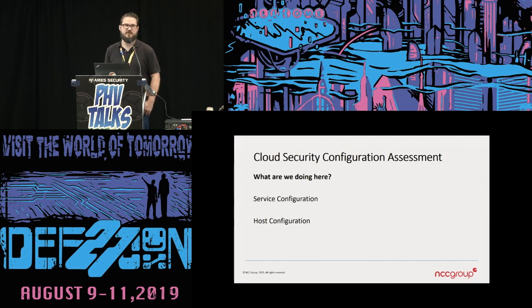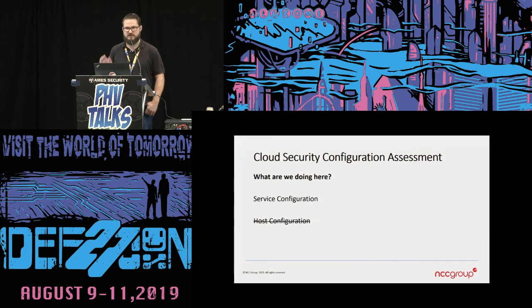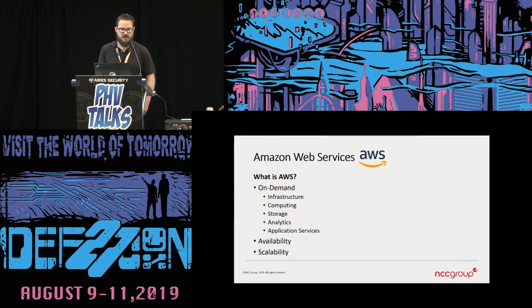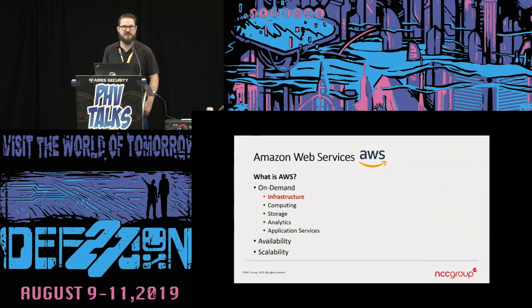Configuration reviews typically fall into two different categories: we are looking at services, or the hosts or VMs themselves. Today we are not going to be looking at the host — we are going to be focusing specifically on the services. AWS is Amazon's web services. It is on-demand infrastructure, computing resources, storage resources, analytics, and application services. They are available and scalable. Most people think of AWS as infrastructure as a service, which contrasts with Microsoft's Azure.